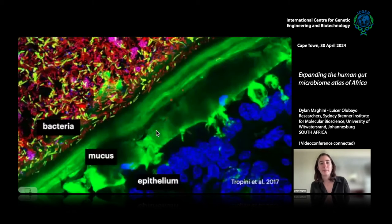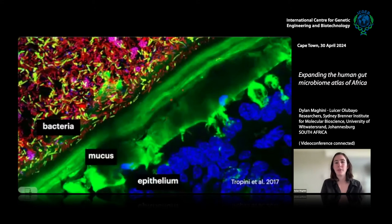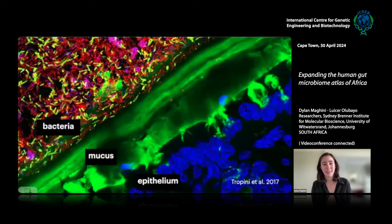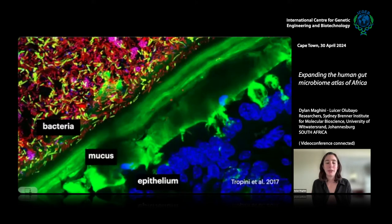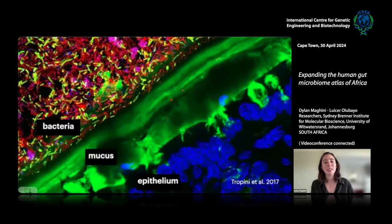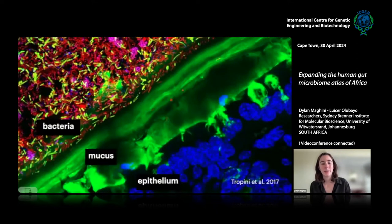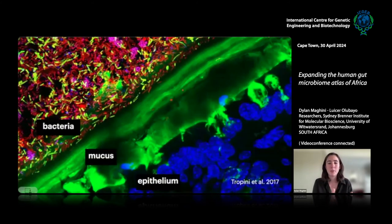I really like this microscopy image from Tropini et al. from the Sonnenberg lab at Stanford, where they took a cross section of mouse intestine. You can see and appreciate how closely connected we are to this microbial community. In the bottom right are blue-stained epithelial cells — our intestinal cells. There's a thick layer of mucus going diagonally across, and three major phyla of bacteria stained in different colors in the top left. Microbes are constantly eating at this mucus, signaling across this barrier, while our epithelial cells secrete factors to sculpt those microbial communities. This is a very intimate and closely connected relationship.